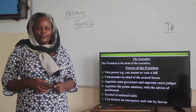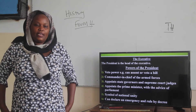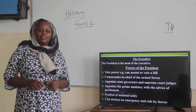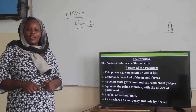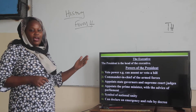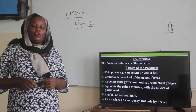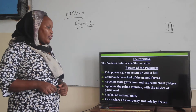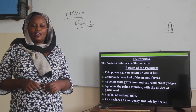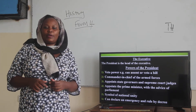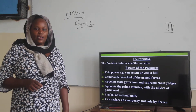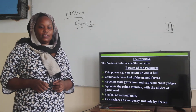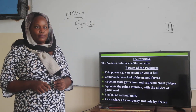The executive is made up of the president as the head of the executive, and the president has the following powers. He has the veto power — meaning he can accept or reject bills. He is also the Commander-in-Chief of the armed forces, and he appoints state governors and Supreme Court judges with the approval of parliament. He also appoints the prime minister with the advice of parliament — the prime minister normally comes from the party with the majority. He is also a symbol of national unity, and he has the power to declare an emergency and rule by decree during times of crisis.